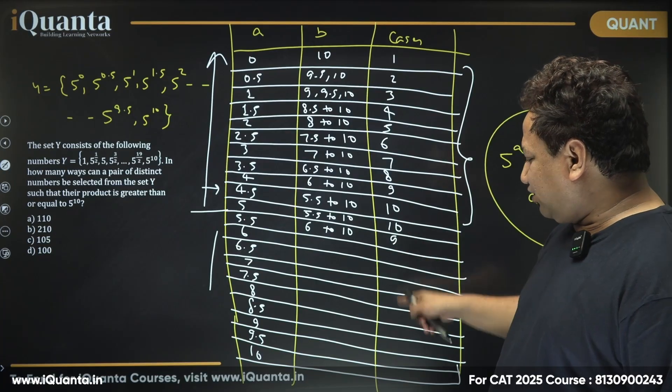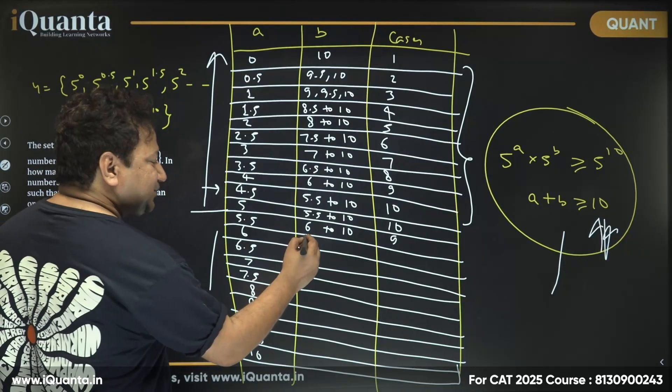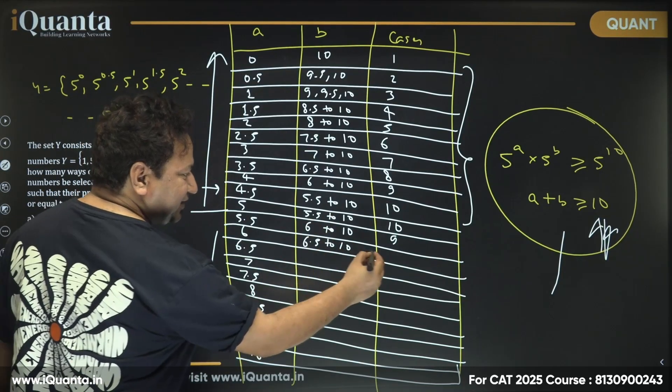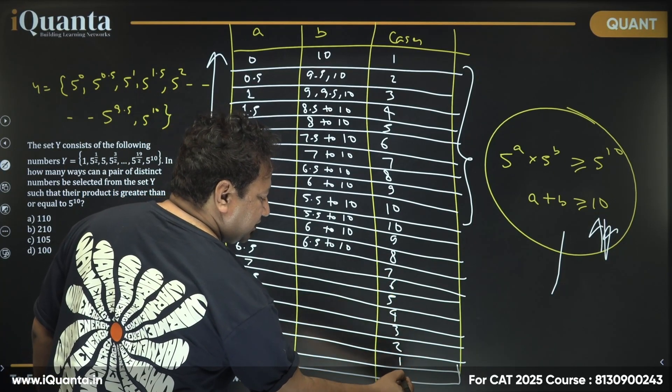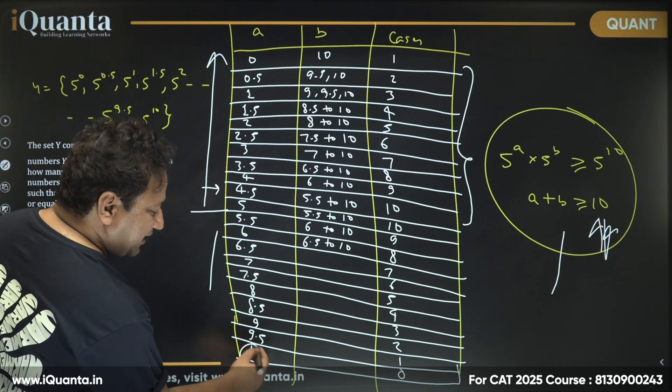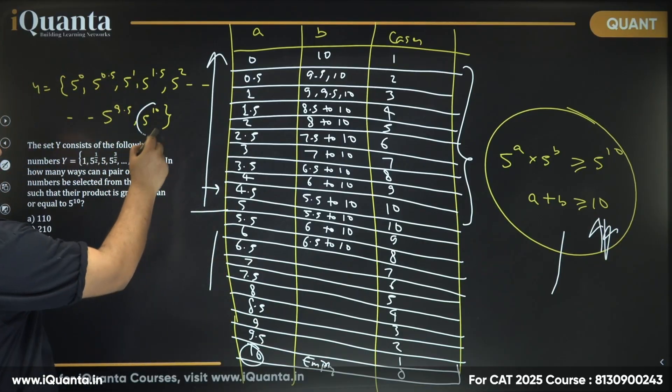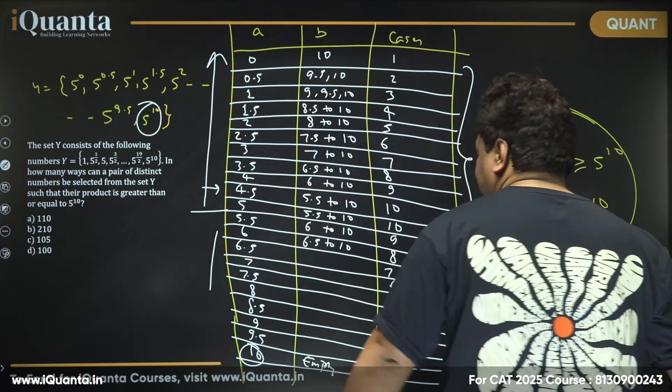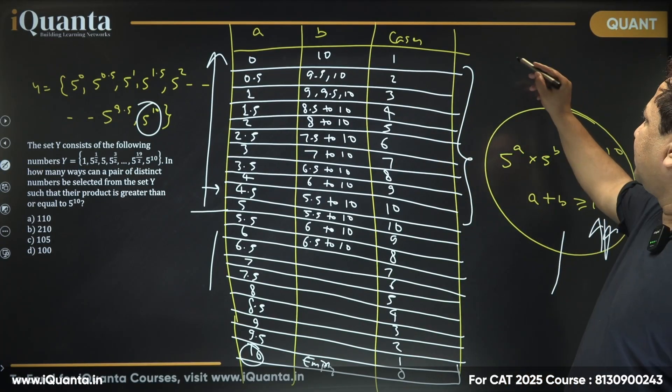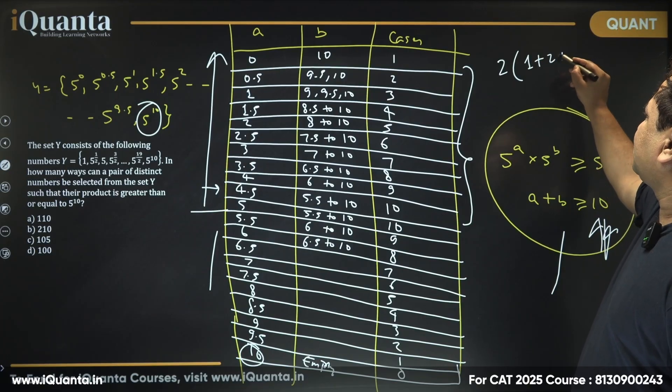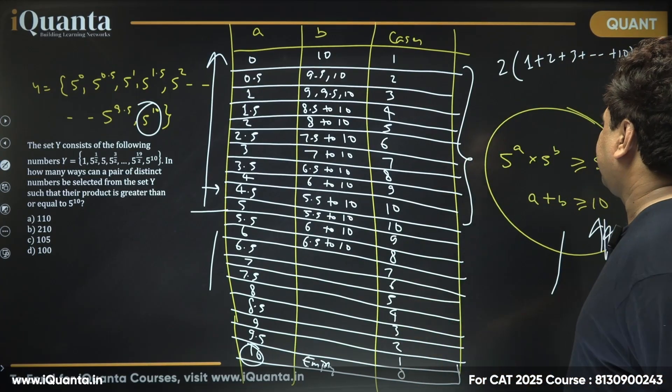For 6, I should start from 6.5 to 10, which gives 8 values. Then we have 7, 6, 5, 4, 3, 2, 1, and 0. If it is 10, I cannot fill anything here. This will be empty because 10 is the highest value here. So 1 to 10, then 10 to 1. Basically it's nothing but 2 times sum of 1 plus 2 plus 3 till 10. So 2 times sum of first 10 natural numbers.